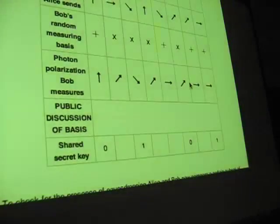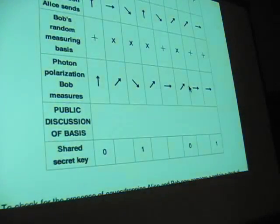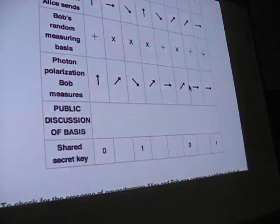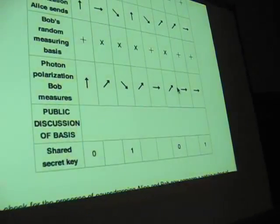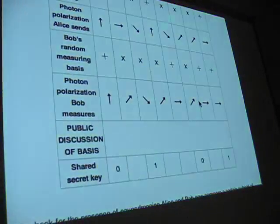And then Bob uses that filter, that result, to filter his results. And then he gets the results in this game. So it's only 50% efficient, if that makes sense. So that's kind of how the whole process works. Now I'm going to explain why it's unbreakable.